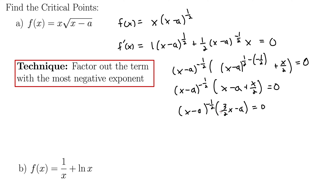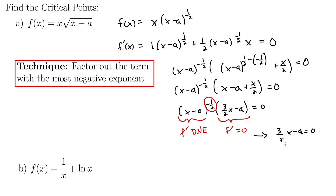Now we have two different factors to work with. The right factor, 3 halves x minus a, is where f prime equals 0. The left factor, x minus a to the negative 1 half, is where f prime does not exist — because it's actually 1 over x minus a, putting it in the denominator. Setting the right factor equal to zero gives 3 halves x equals a, so x equals 2 thirds a. Setting the denominator equal to zero gives x equals a.